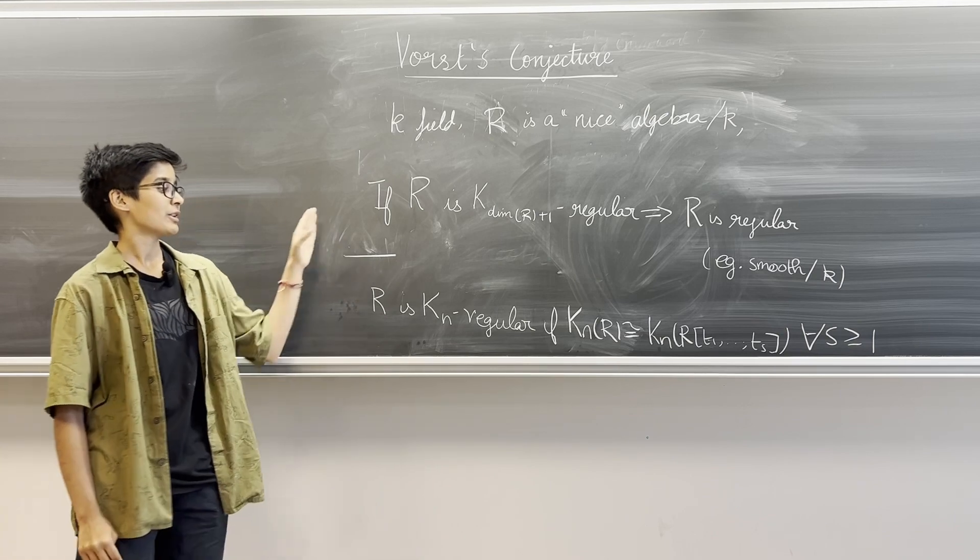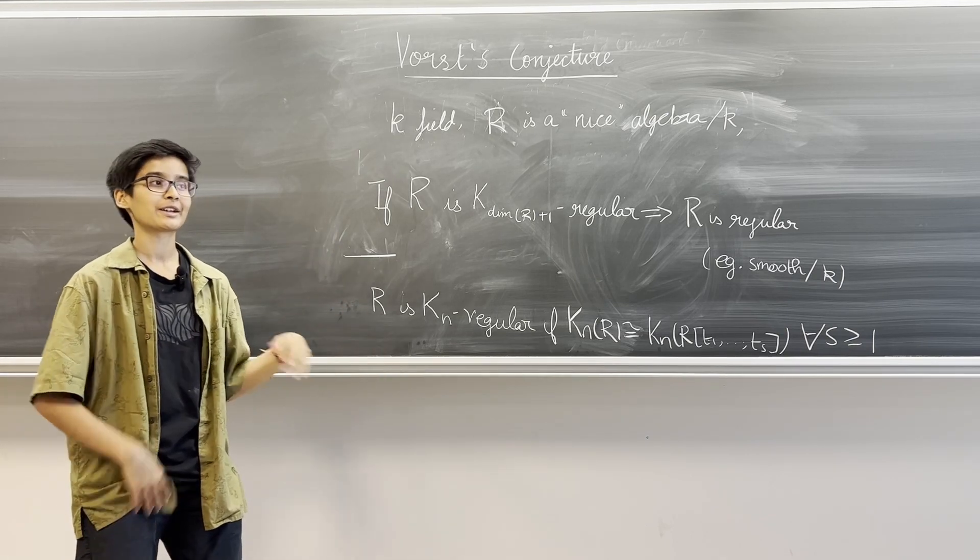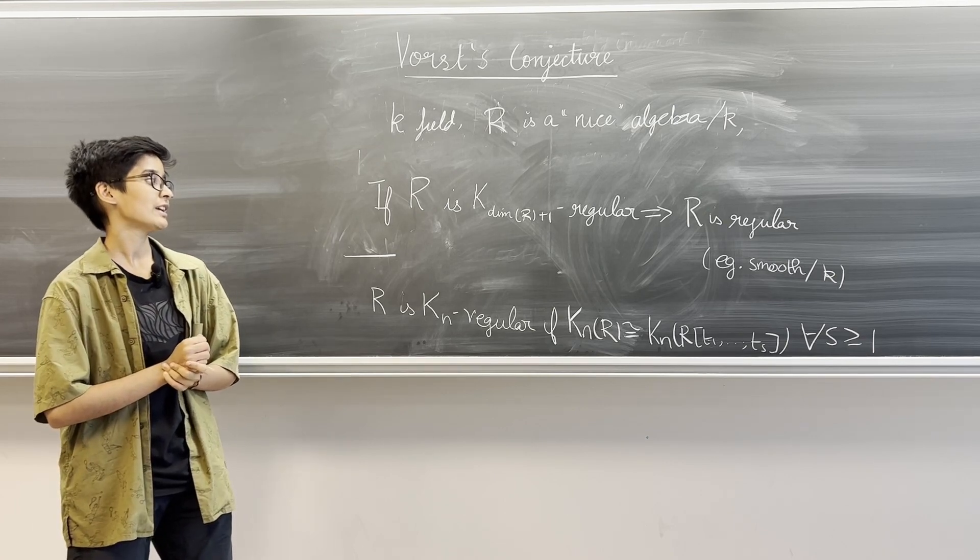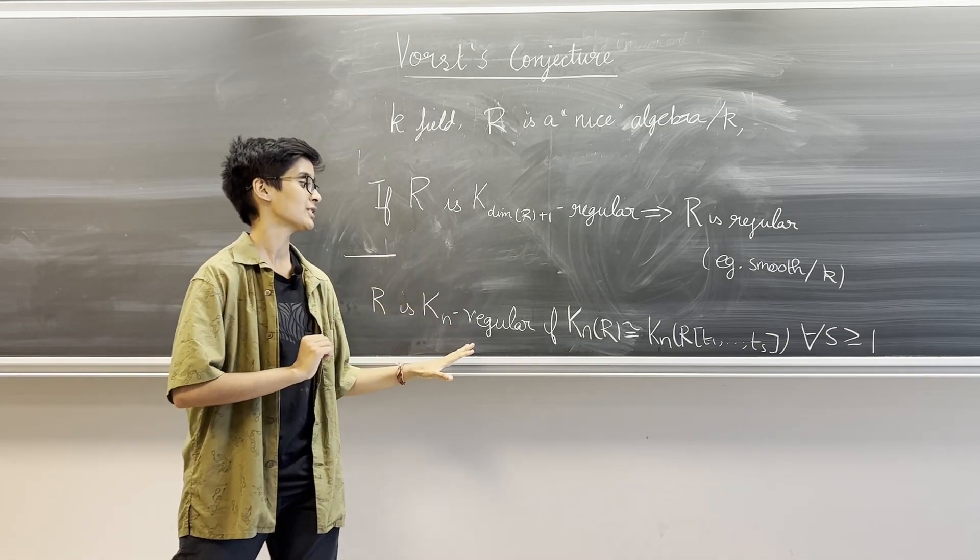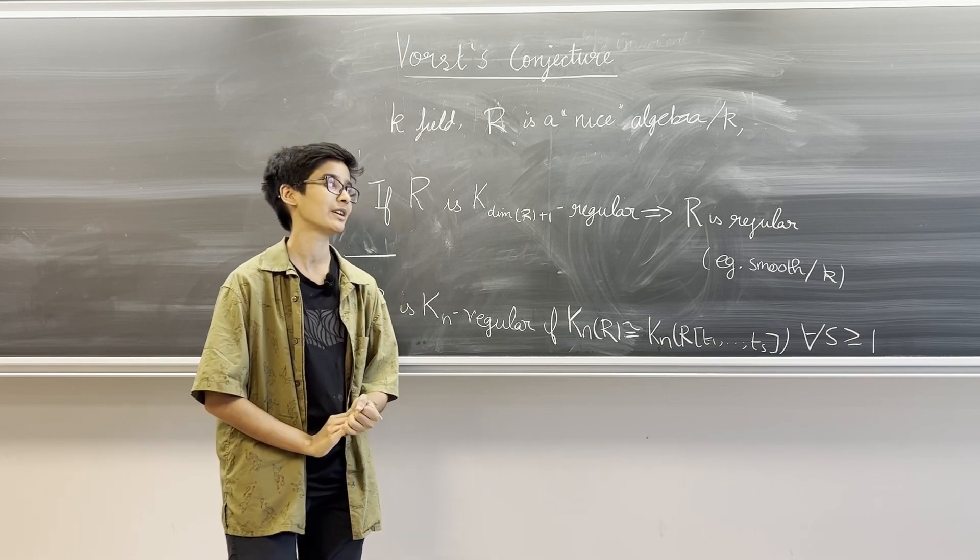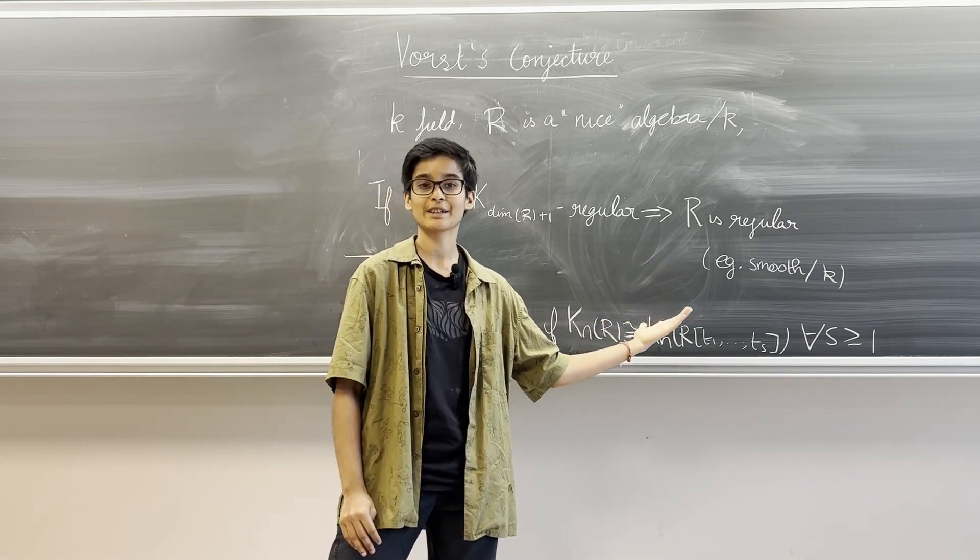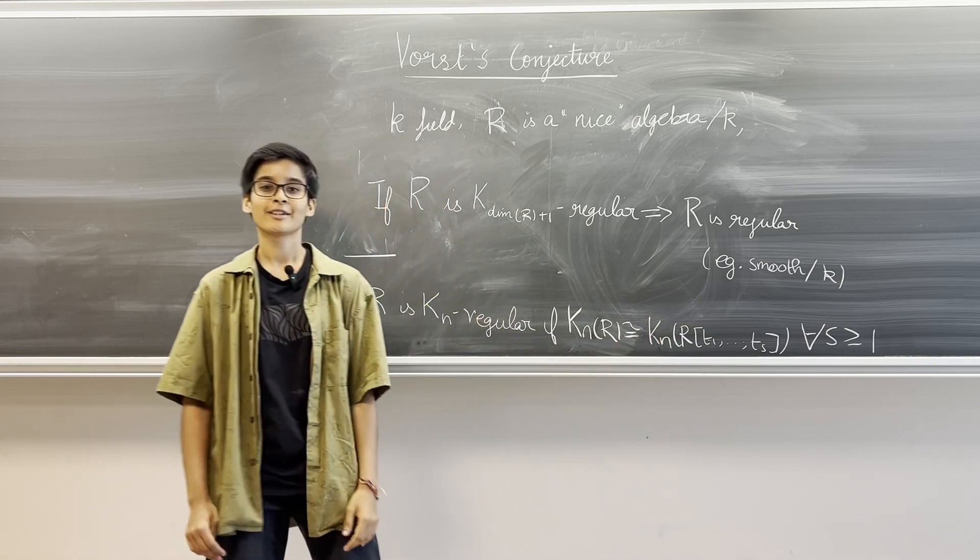This statement along with this definition of Kₙ regularity means that if we take a nice algebra over a field and we take a high enough K group that satisfies this property which is an extension of A1 homotopy invariance, then we get that this algebra is regular or for example smooth over a field K.